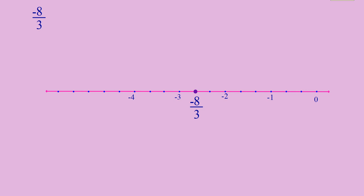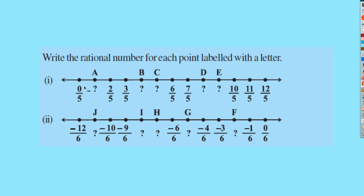This way you can represent positive or negative rational numbers on a number line. Now let us look at some questions. In the number line shown, 0 by 5 represents 0. The first point is 1 by 5, the next is 2 by 5, then 3 by 5, and point B represents 4 by 5. Now represent points C, D, and E on this number line. For the next number line, 0 is at the extreme end, so all points to the left represent negative rational numbers. Write what points F, X, I, and J represent.